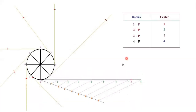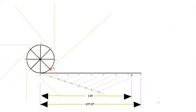Now take your compass and take a radius of 1-dash to P. Place your compass at 1-dash and take the distance to P. Before that, we need to draw perpendicular lines: keep your protractor at point 1, taking C1 as your base and 1 as center, and draw a 90-degree perpendicular line. Similarly, C2 as base and 2 as center — draw a perpendicular line. C3 as base and 3 as center — draw a perpendicular line. C4 as base and 4 as center — draw a 90-degree perpendicular line.